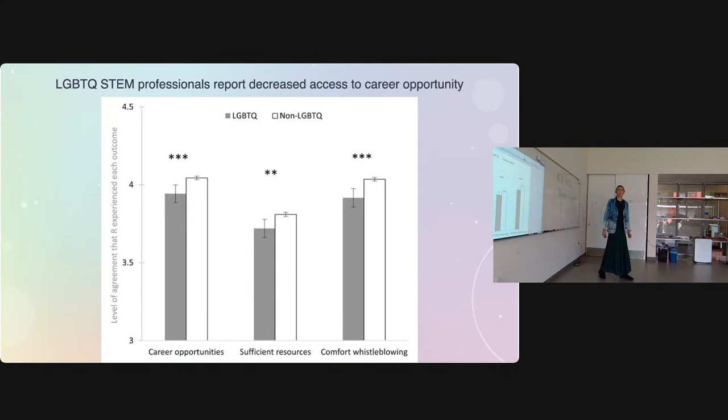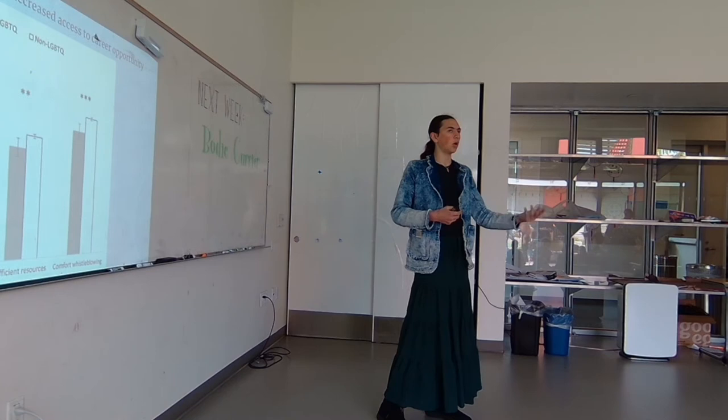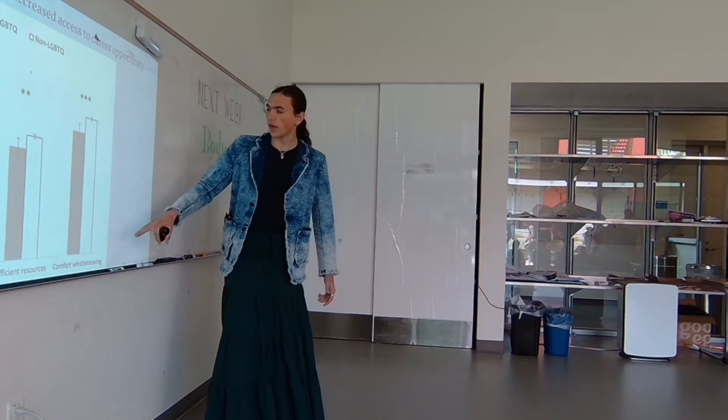First of all, we're looking at comfort whistleblowing, sufficient resources, and career opportunities, which were kind of lumped together in their hypotheses. And so imagine you are a STEM professional taking this survey. You'd be asked something like, agree or disagree on a scale of one to five, with the following statement. I feel comfortable reporting any illegal activity in the workplace. And so everyone gave from one, strongly disagree, to five, strongly agree, with three being neutral. And I want you to note that the axis, the y-axis, is from three to 4.5. So really, the proper one to five scale goes from here to here.